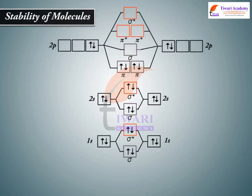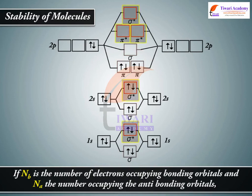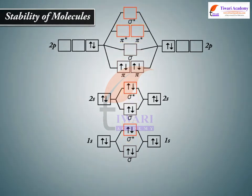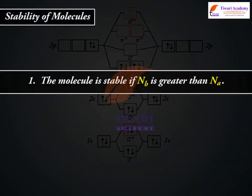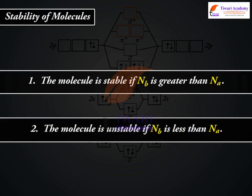Stability of Molecules. If Nb is the number of electrons occupying bonding orbitals and Na the number occupying the antibonding orbitals, then: 1. The molecule is stable if Nb is greater than Na. 2. The molecule is unstable if Nb is less than Na.